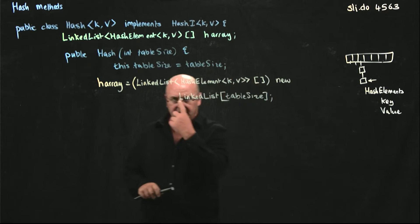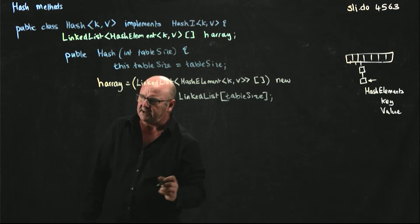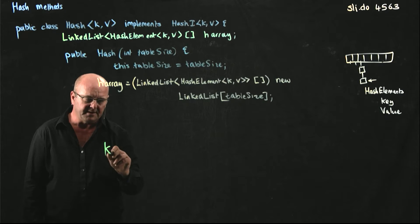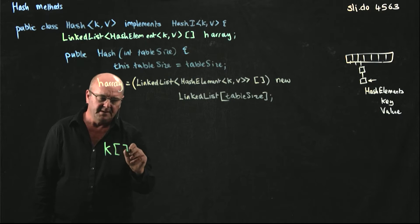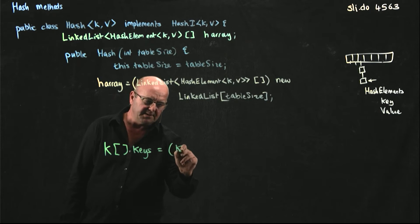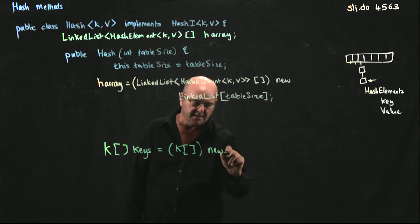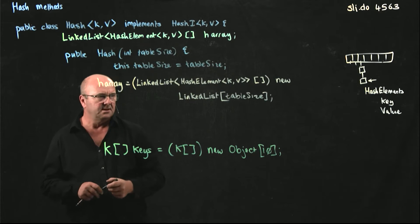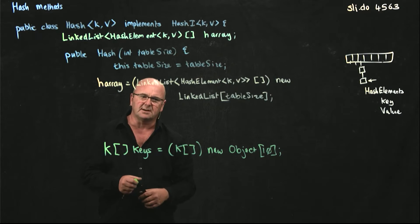If we were just creating a standard generic array, for example, this is one that we'll see later. We're going to have an array of keys. The way that we do that is that we create an array of objects and cast it to the generic keys.